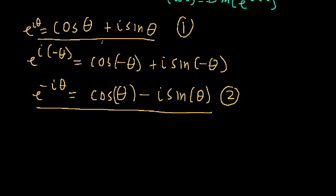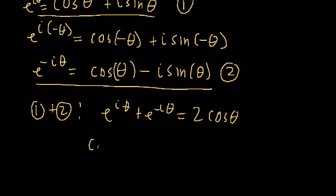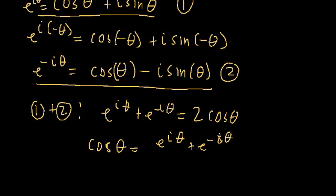Let's start by isolating the cosine terms by adding equation 1 and equation 2 together. The left-hand sides give us e to the i theta plus e to the negative i theta. The right-hand sides give us cosine theta plus i sine theta plus cosine theta minus i sine theta, which simplifies to 2 times cosine theta. Dividing by 2, we get that cosine theta equals e to the i theta plus e to the negative i theta, all over 2.